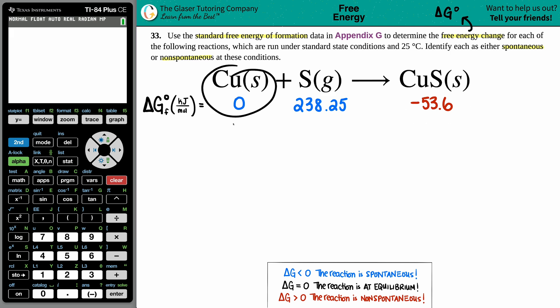So I went in the back of the textbook and found each individual delta G value. For copper solid, since this is just copper in a solid state, it's zero kilojoules per mole. Sulfur gas is 238.25. And for copper sulfide solid, it's negative 53.6.